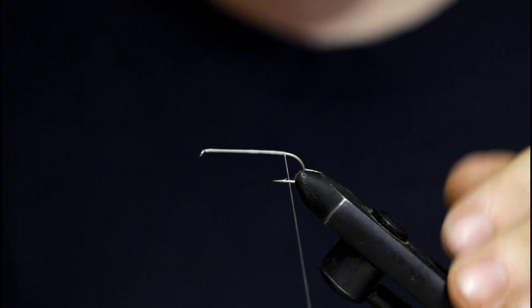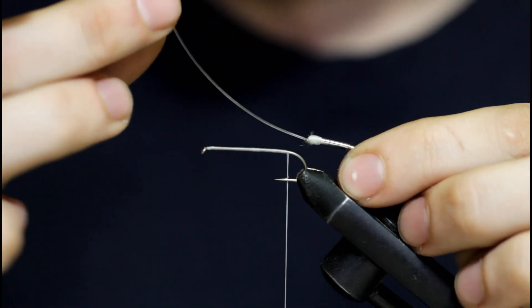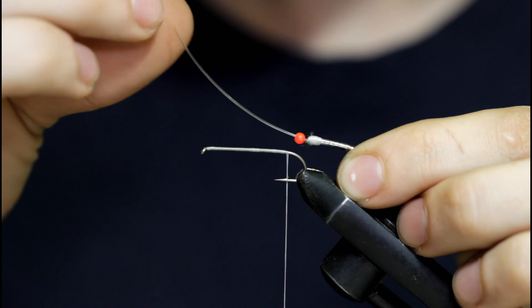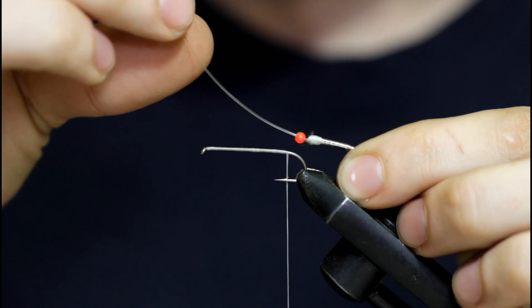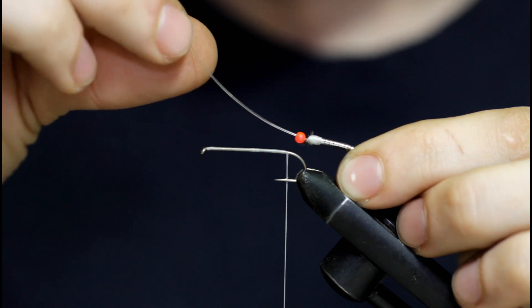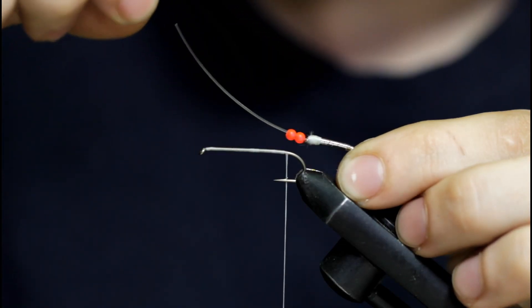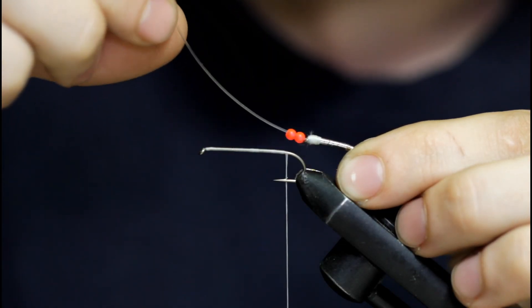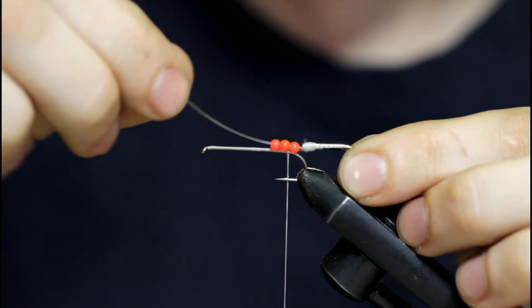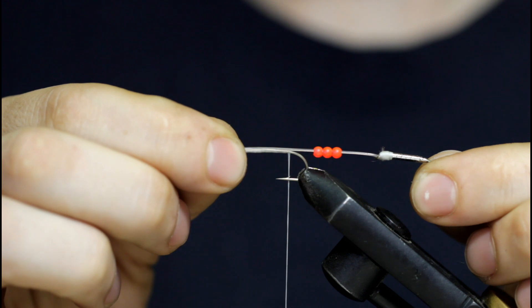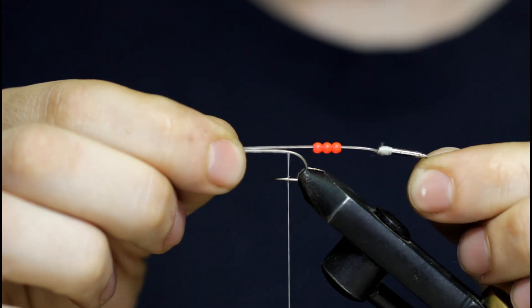I'm going to grab the rear hook that I just made. I'm going to slide a few small orange beads on. The pattern originally calls for two small orange beads, but I'm going to put three on here. That looks pretty good. I think I'm going to tie it in like this this time.